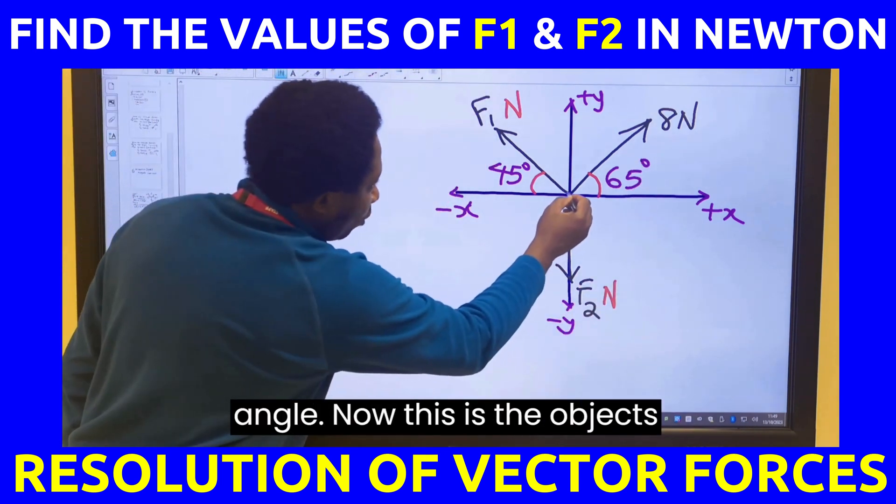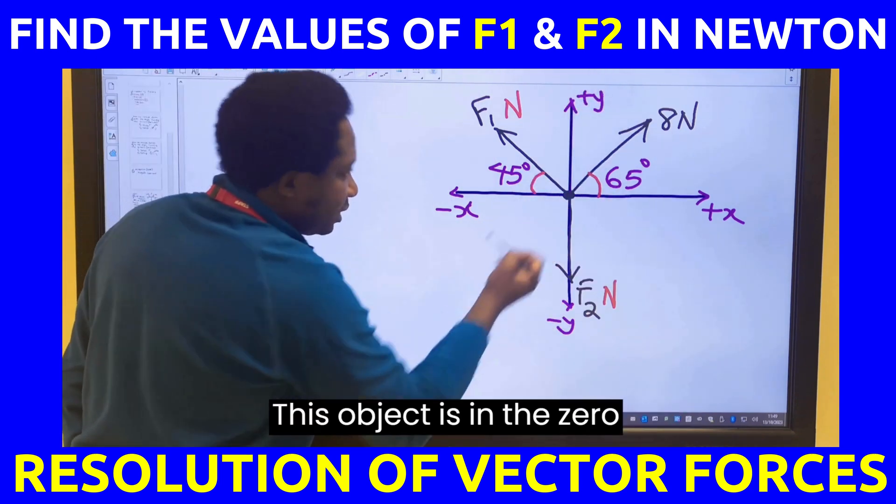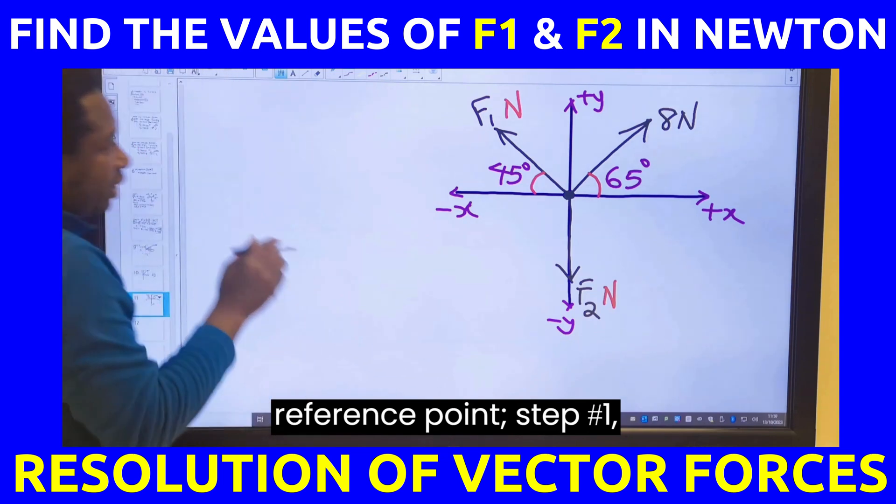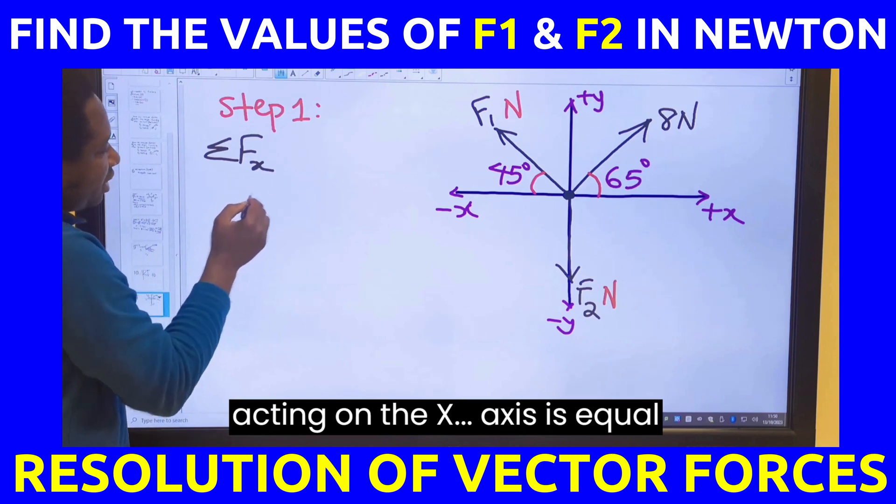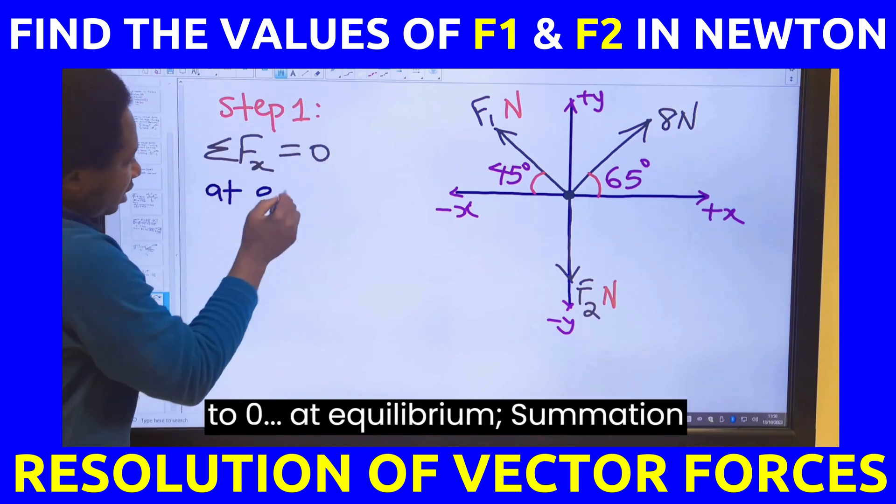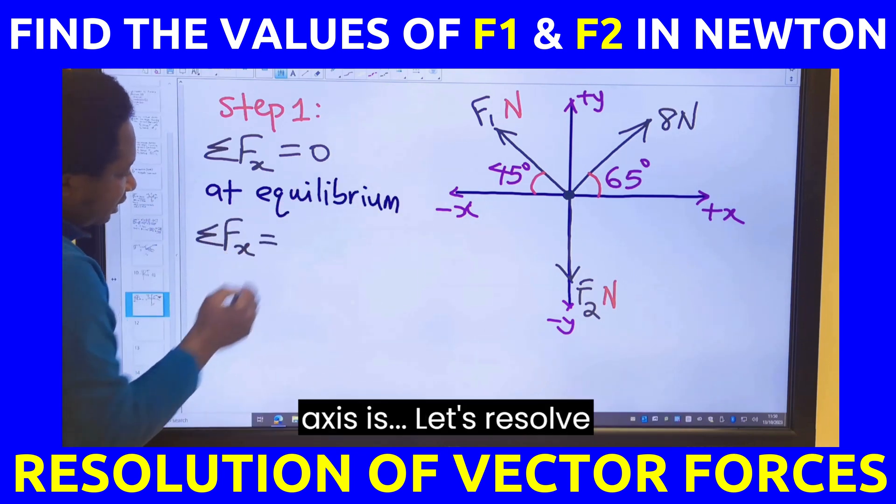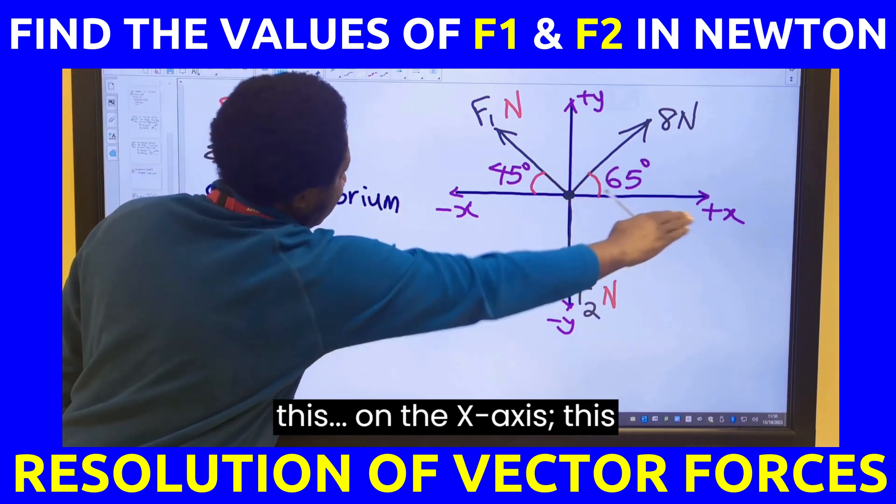Now, this is the object that all these forces are acting on. This object is in the 0 reference point. Step number 1: Summation of all the forces acting on the x-axis is equal to 0 at equilibrium. Let's resolve this on the x-axis.